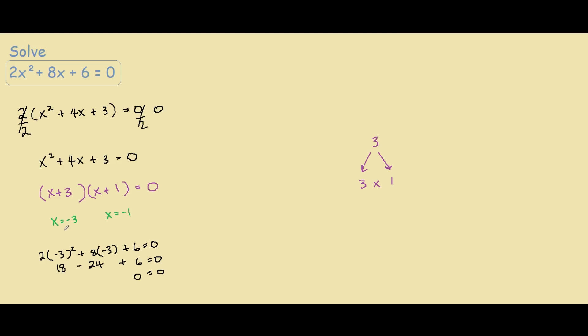Therefore negative 3 is the solution. And if we were to check x equals negative 1, we have 2 times negative 1 squared plus 8 times negative 1 plus 6 equals 0. So 2 times 1 is 2, minus 8 plus 6 equals 0. So 2 plus 6 is 8 minus 8 is 0, so 0 equals 0.